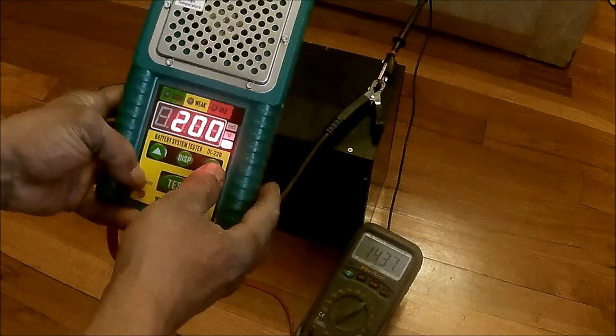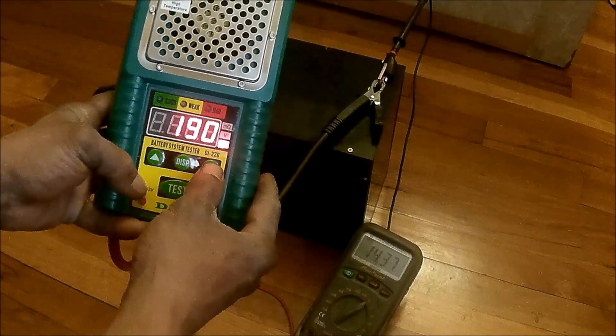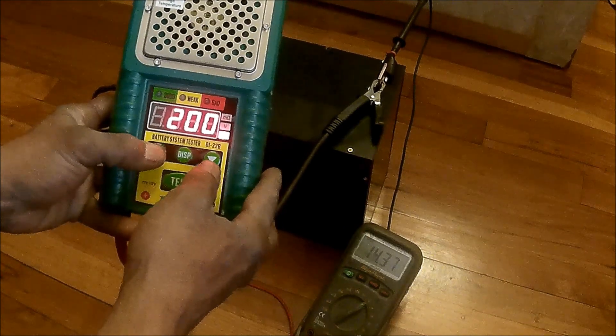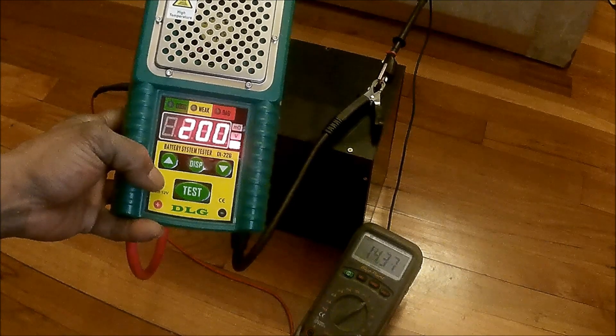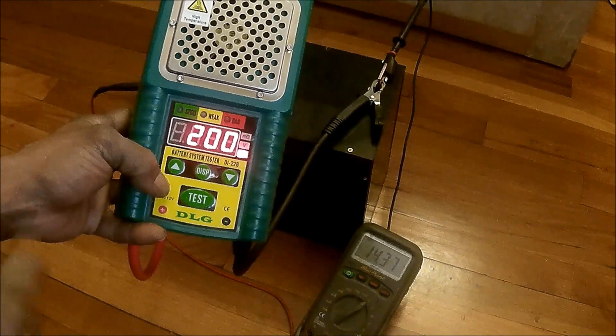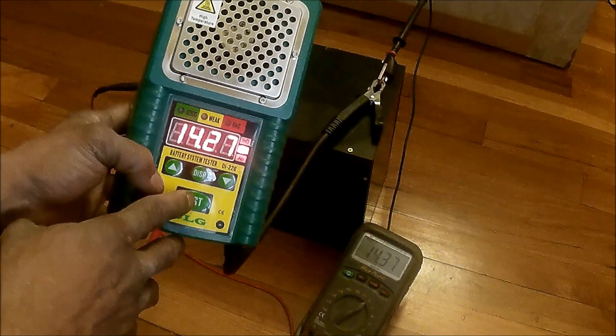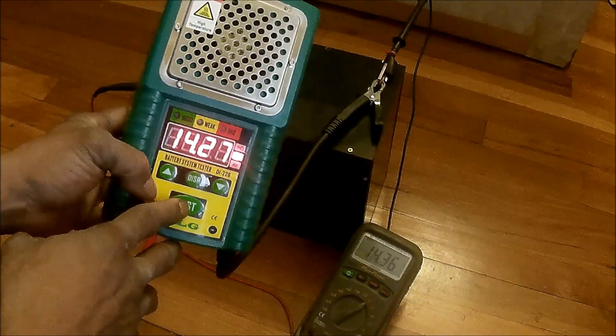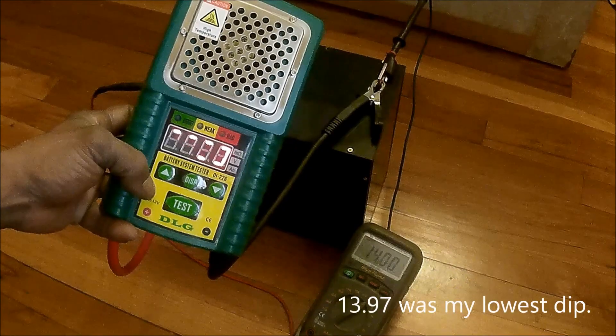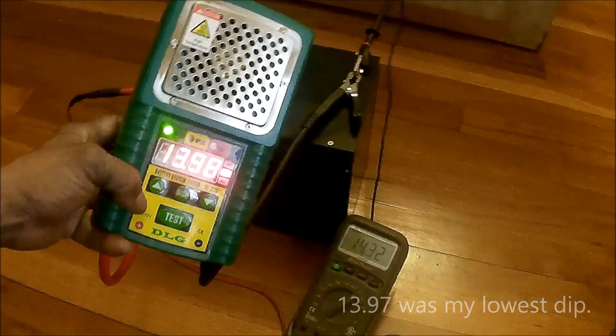It reads in amp hours, so I know 200 amp hours is approximately a thousand amps, give or take. Let's go down and give this battery a test, see what happens. All right, the voltage, as you guys can see, dropped down.